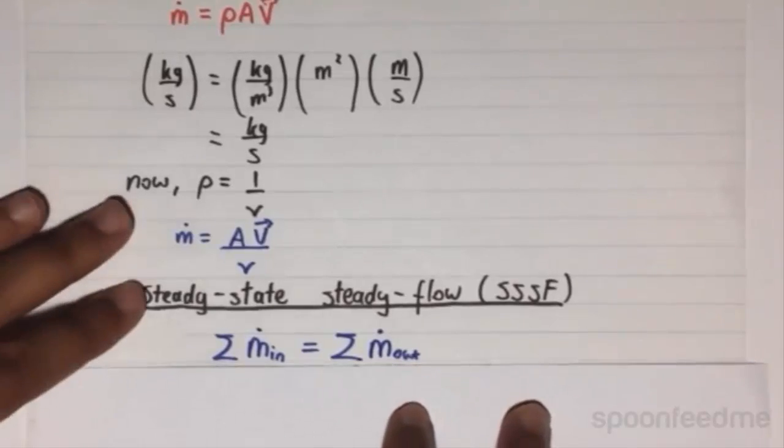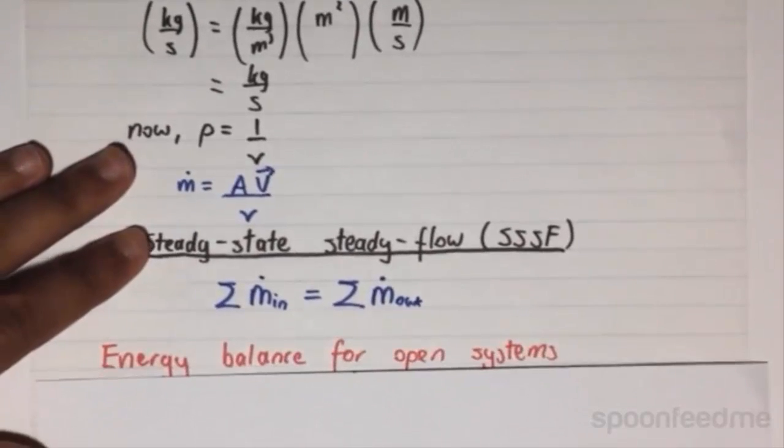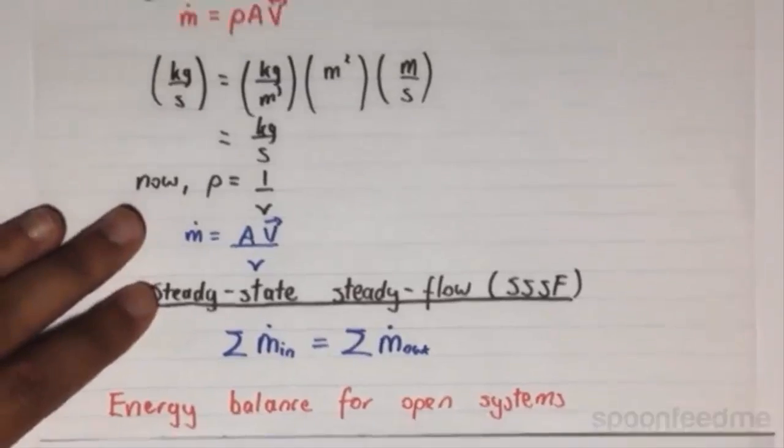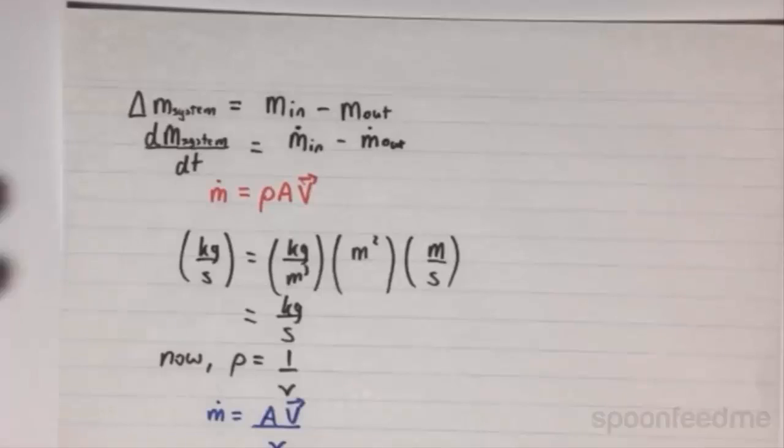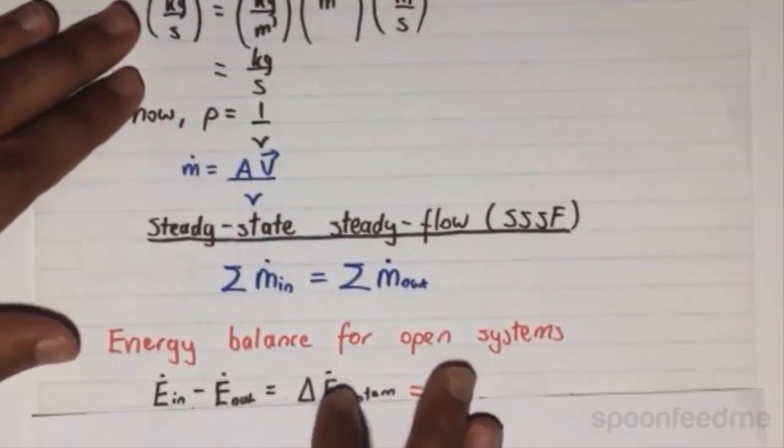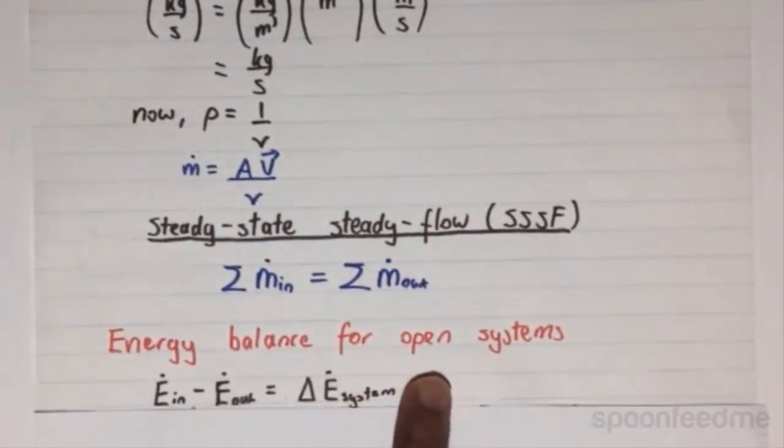Moving on to the energy balance of open systems. Similar to the mass flow rate definition, we can define the energy flow rate as this. Just like in the mass flow rate case for steady state, steady flow, the energy in is going to equal the energy out. Therefore, the change in the energy flow of the system is going to equal 0.